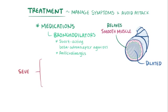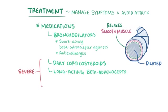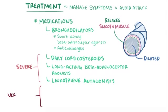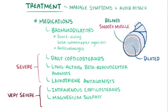Individuals with more severe forms of asthma might need additional treatments, like daily corticosteroids, long-acting beta-adrenoceptor agonists, or leukotriene antagonists. In very severe cases, intravenous corticosteroids, magnesium sulfate, and oxygen therapy might be needed.